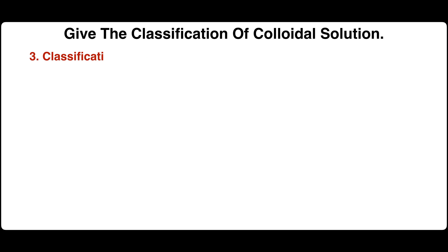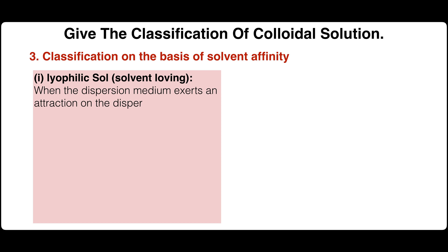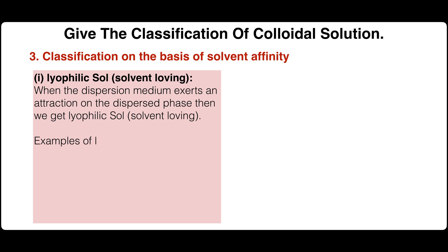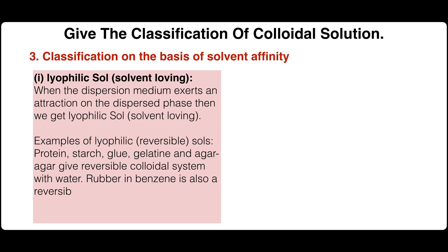Third, classification on the basis of solvent affinity. Colloids are classified into two parts: lyophilic (solvent-loving) sols and lyophobic (solvent-hating) sols. When the dispersion medium exerts an attraction on the dispersed phase, we get lyophilic sols. Examples of lyophilic reversible sols are protein, starch, glue, gelatin, and agar-agar, which give reversible colloidal solutions with water. Rubber in benzene is also a reversible colloidal system.